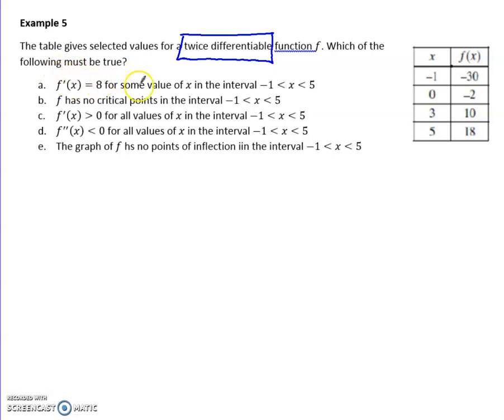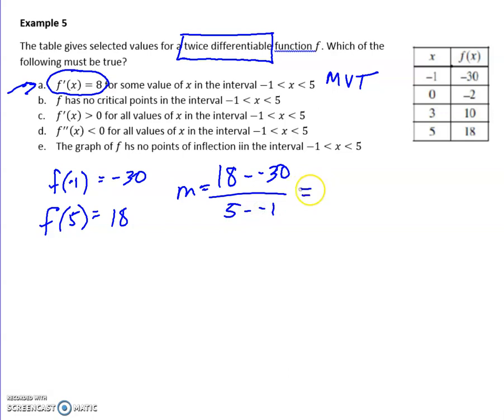Okay, so let's see. The first one says the derivative equals 8 for some value. Well, we've seen this elsewhere in the last few units. This is mean value theorem. You only know that the slope between these two values has to be 8 if the slope between negative 1 and 5 is also 8. Because remember, that's what MVT says. So we can see if that's true by plugging in negative 1 and 5. And we can get those from over here, negative 30 and 18. And then we can find the slope between the end points. So here we go. 18 minus negative 30 over 5 minus negative 1 gives me 48 over 6 or 8. Hey, that worked. That's actually the true statement.